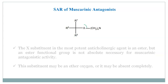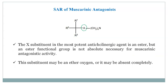The substituent X in the most potent anticholinergic agents is an ester. However, an ester functional group is not absolutely necessary for showing muscarinic antagonistic activity, and this substituent may be an ester oxygen or may be absent completely.